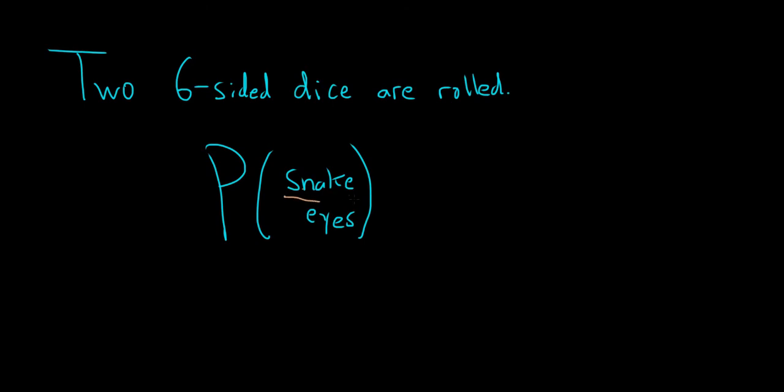Snake eyes means that we get ones on both dice. Let's write that down. This is the probability that the first die is a one and the second die is a one.